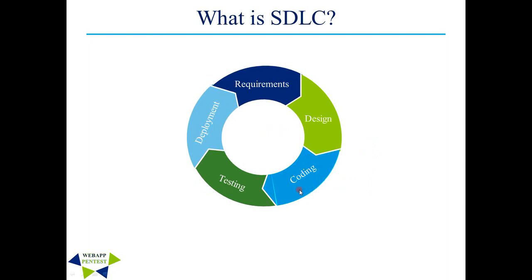The next phase is Coding. During this phase, the blueprint of the software is turned to reality by developing the source code of the entire application. Time taken to complete development depends on the size of the application and the number of programmers involved. The next phase is Testing — once application development is completed, it is tested for various issues like functionality, performance, etc. This ensures the application is performing as expected. If there are any issues, they are fixed before or after going to production depending on the nature and urgency of the issue.